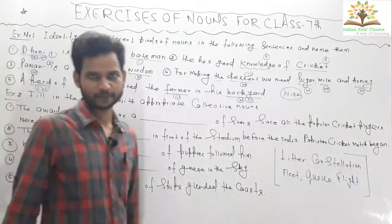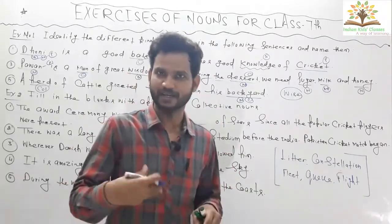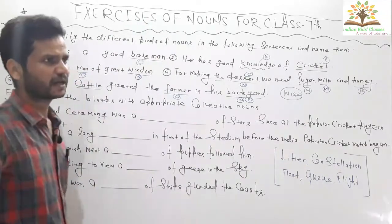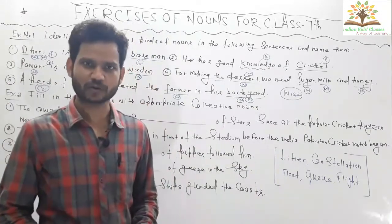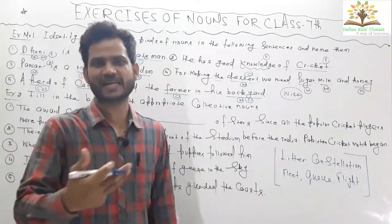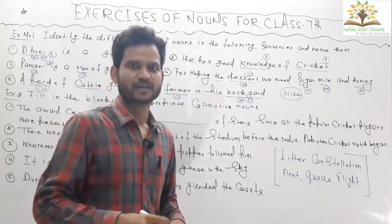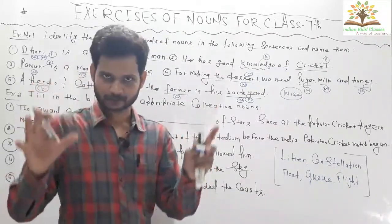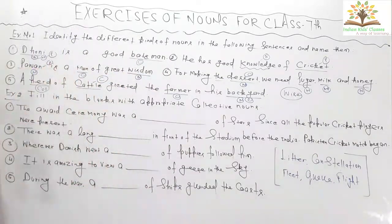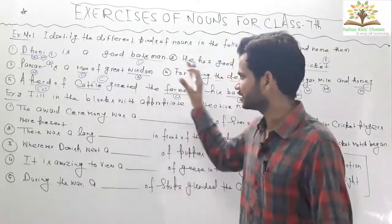Now, herd is a collective noun because it is a collection of animals — herd can be a collection of cows, buffaloes, or goats. Cattle is also considered a collective noun because cattle includes both the animals and the men who are observing, directing, and instructing those animals. So animals plus men together is called cattle — a collective noun.